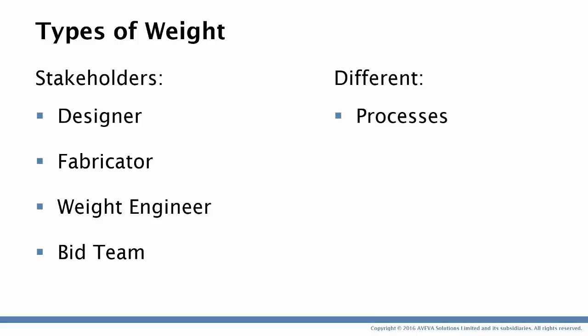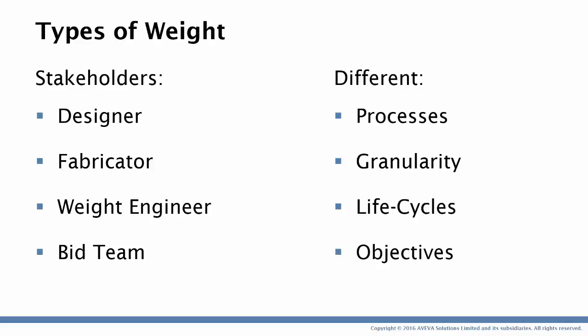Each stakeholder uses different processes. The designer is ultimately creating weight. The bid team is doing so in a very short-term capacity, and there's also a difference in granularity — the bid team is dealing with a very coarse breakdown of weight, while the weight engineer might have a very extensive dataset to work with. That leads into them having different life cycles: the bid team is developing weight over perhaps a few weeks, the weight engineer may be working on a single project for many months or a year, and at the other end of the spectrum the operator might be working with weight for a number of decades. Each of these stakeholders have different objectives, and each may be supported by Aviva Engineering.